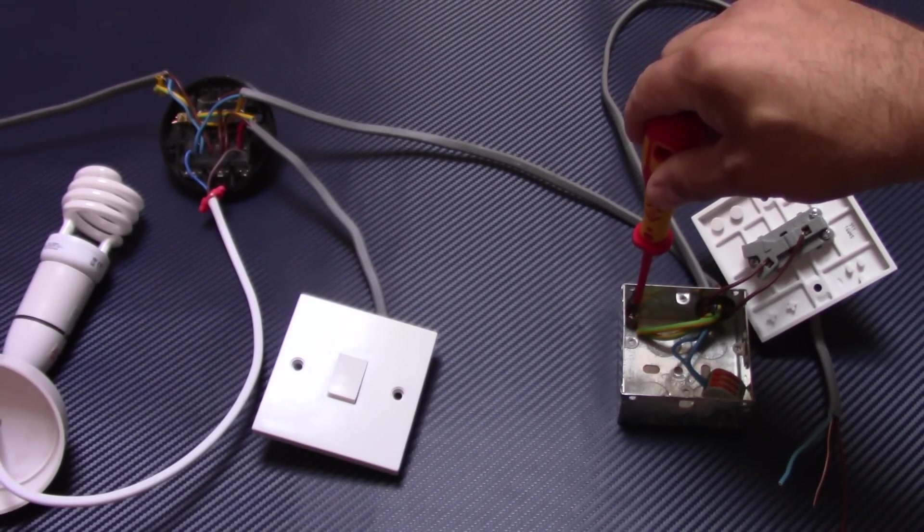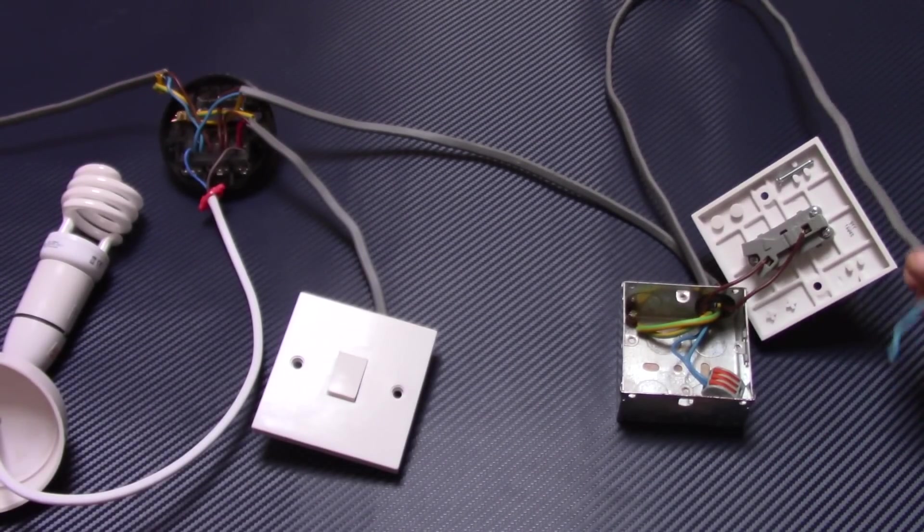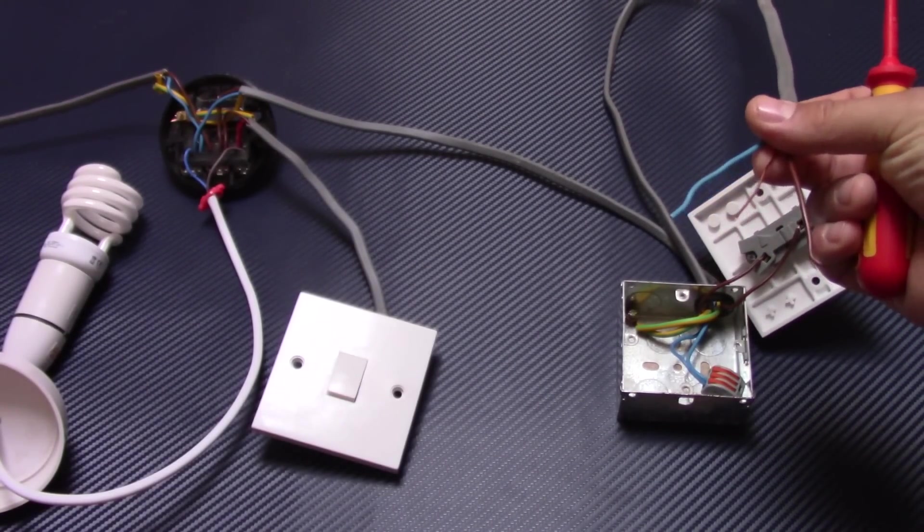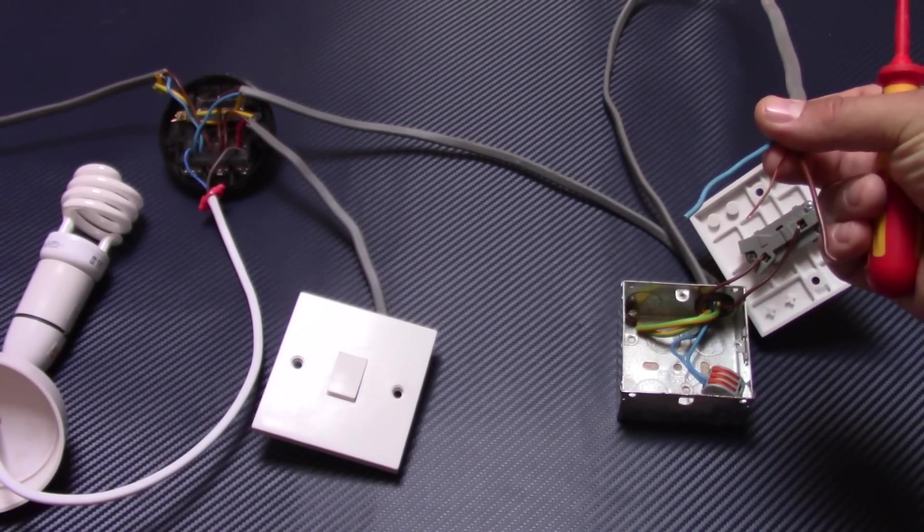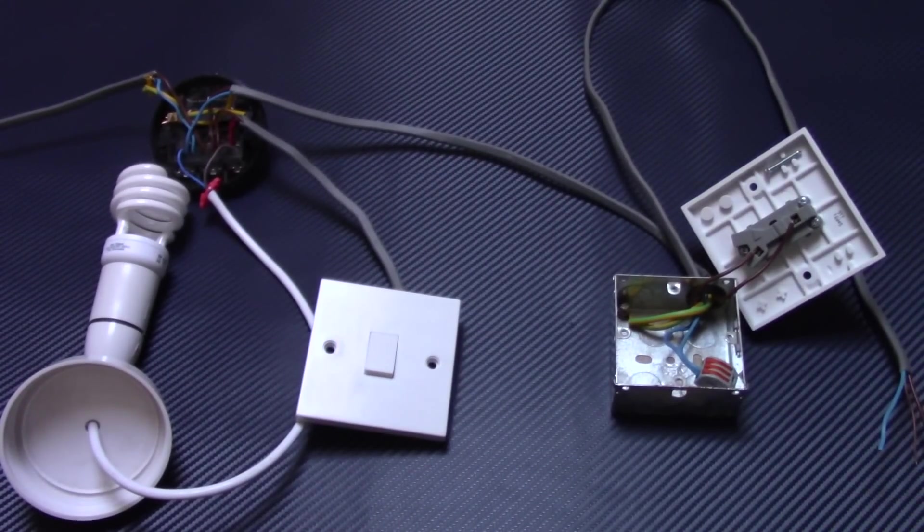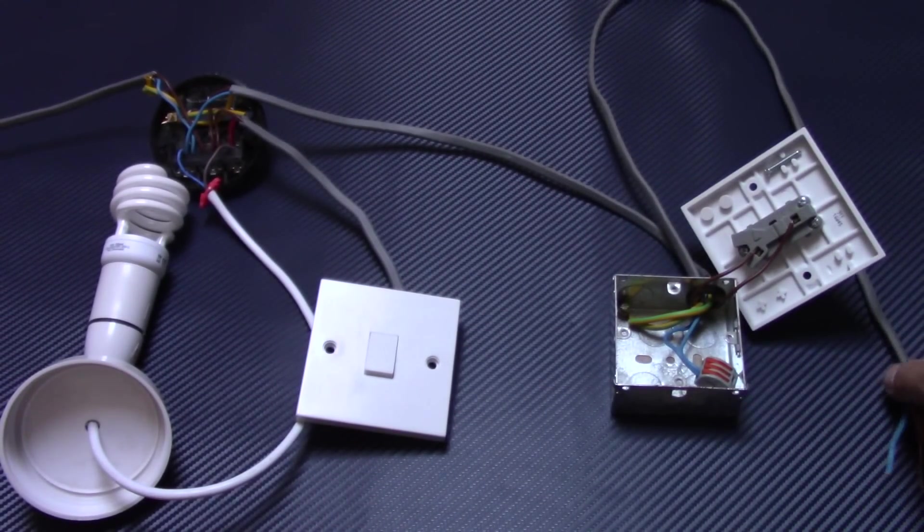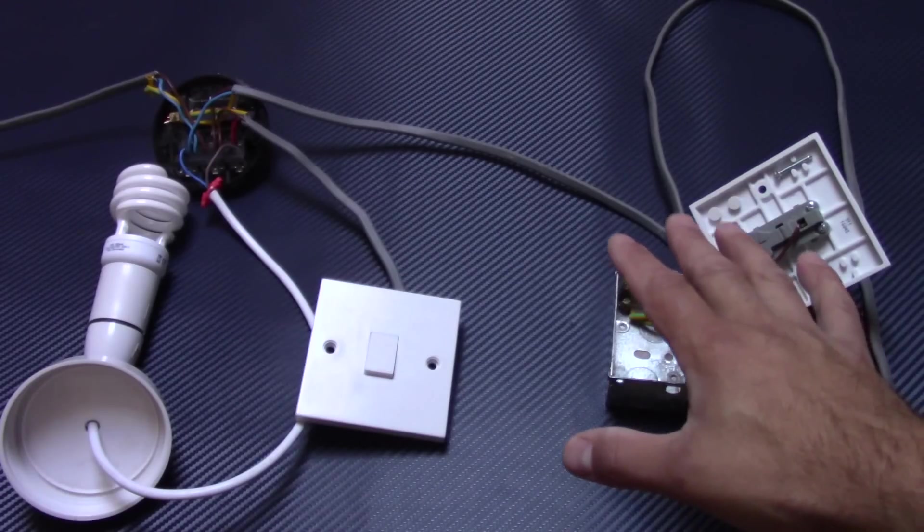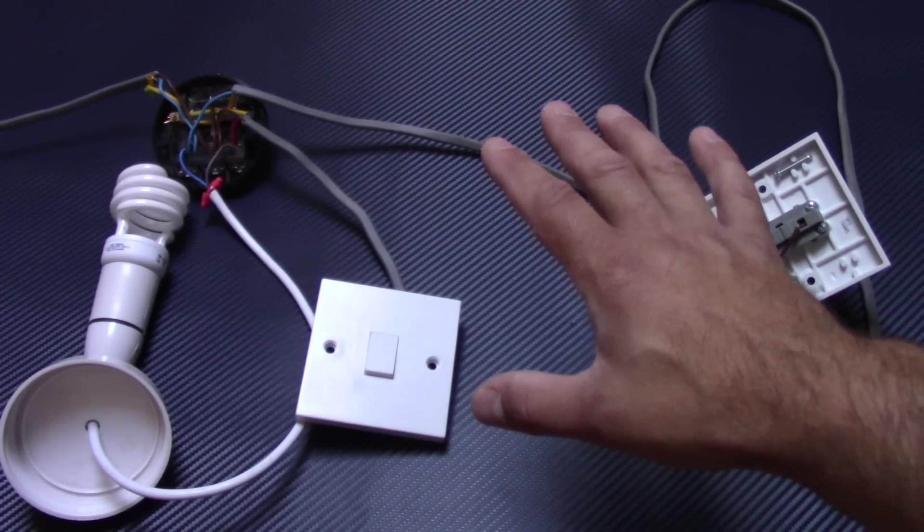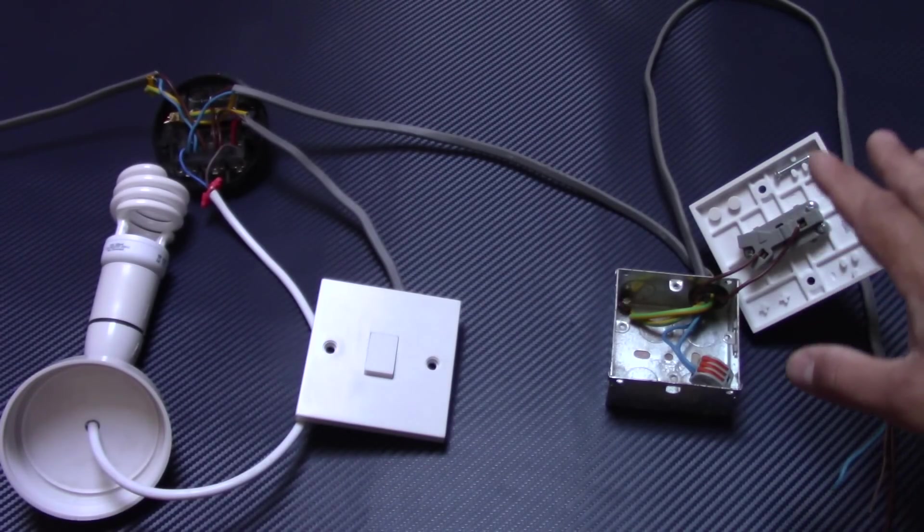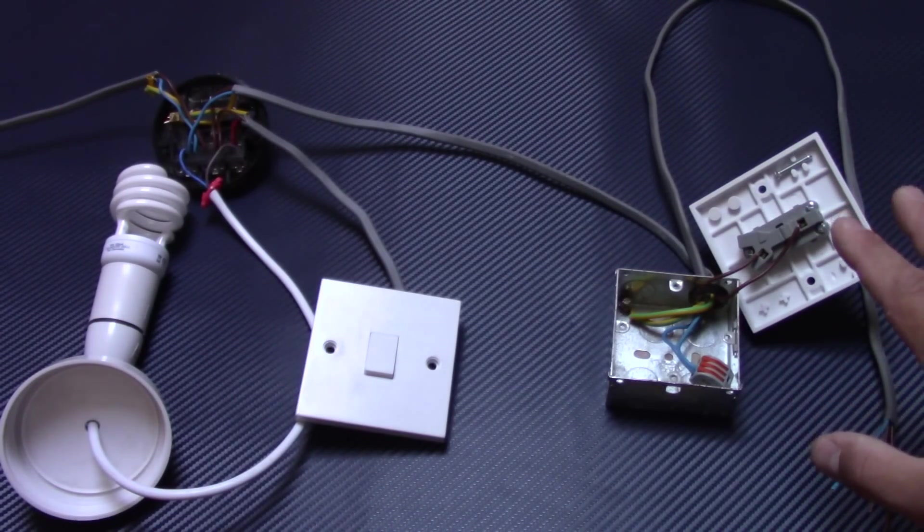So this cable in the ceiling goes to first spotlight, everything okay. But in this arrangement we don't have any connection to another light in another room. So there's three options how you can connect another cable that goes to another room.